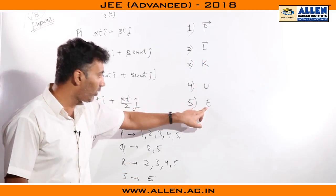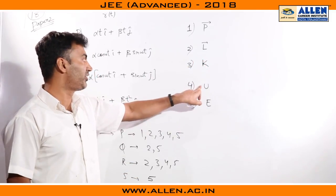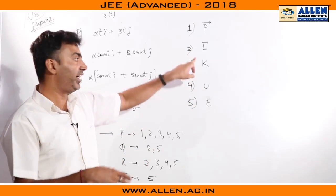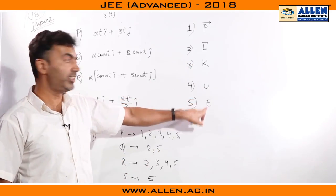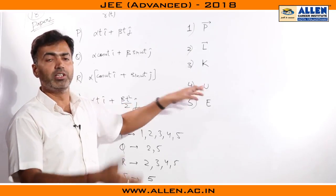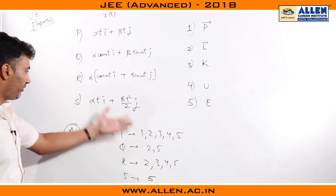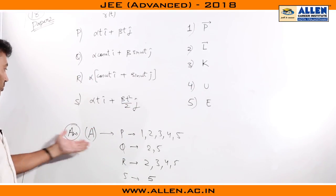If kinetic energy and total energy are both constant potential energy must be constant. If kinetic energy is variable since total energy is constant potential energy will also be variable. Using these ideas we can verify the given set of answers which was A.